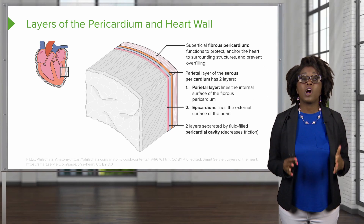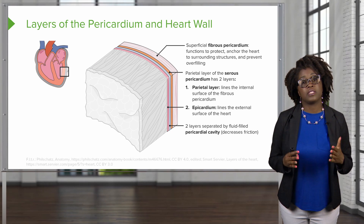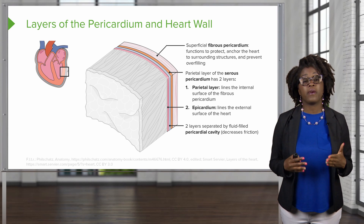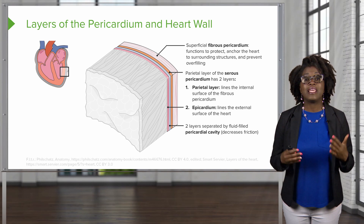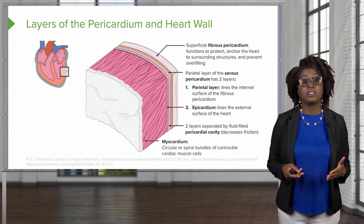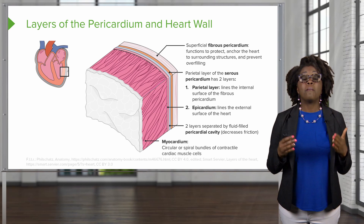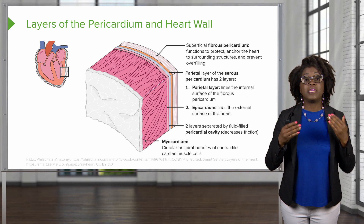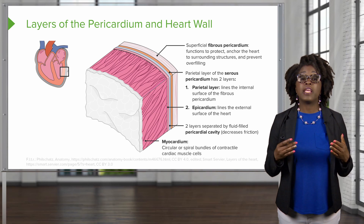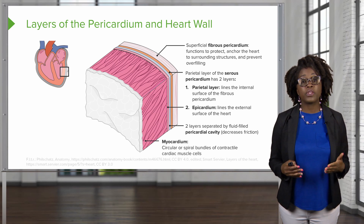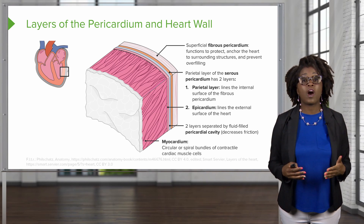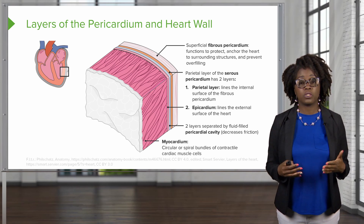Recall that the visceral layer of the serous pericardium is called the epicardium. The myocardium is just deep to this epicardium and includes circular or spiral bundles of contractile cardiac muscle.